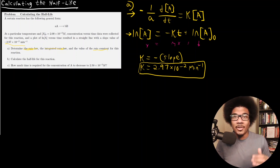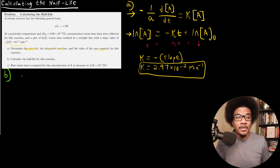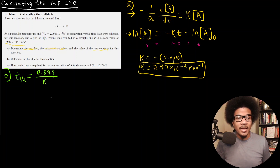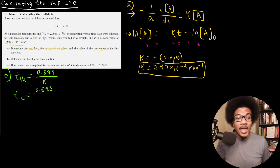For part B, we're asked to calculate the half-life. We'll use the first-order half-life equation derived in the previous video. For a first-order reaction, the half-life is 0.693 divided by the rate constant. The value 0.693 comes from the natural log of one-half, so it's a unitless quantity. In the denominator we have 2.97×10⁻² inverse minutes.